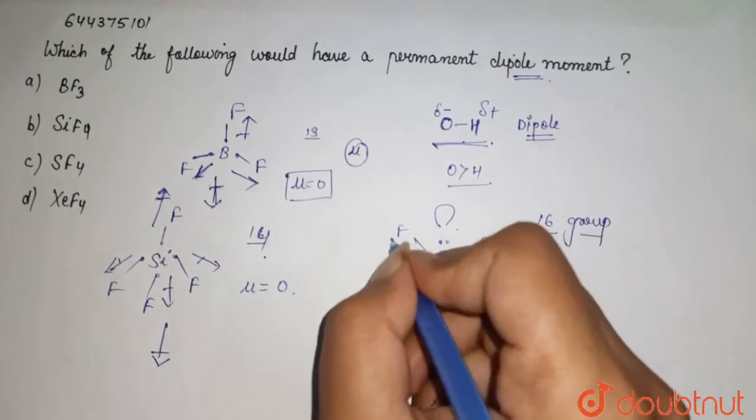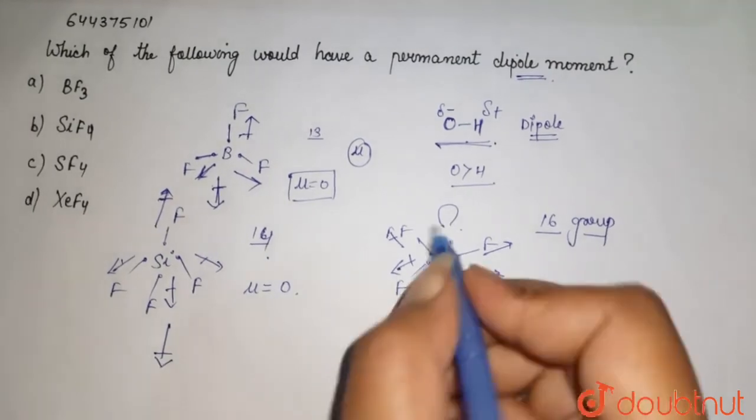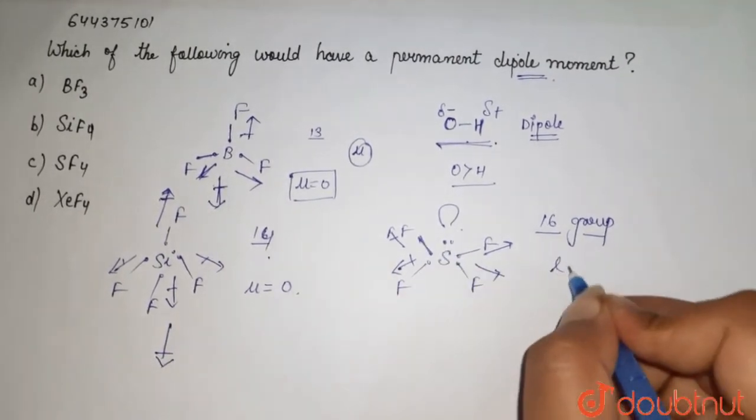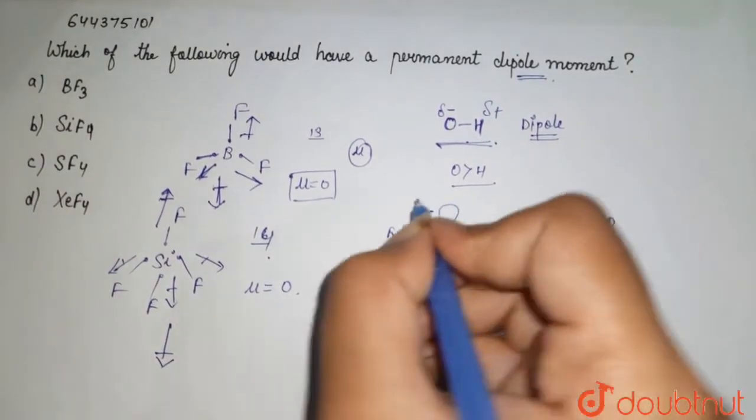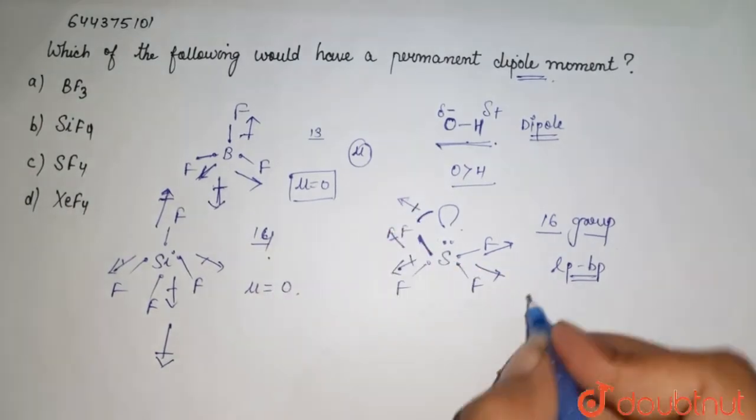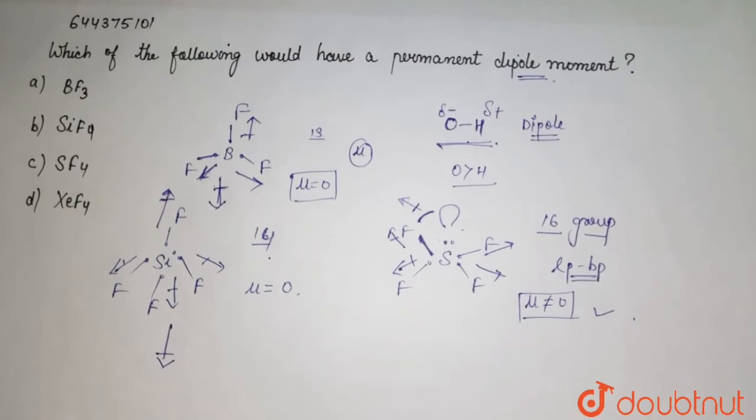Fluorine abstracts electron density towards itself. This lone pair present here and bond pairs cause lone pair-bond pair repulsion. This repulsion will cause a net dipole moment over here, so it contains a dipole. It does not have zero dipole moment due to lone pair-bond pair repulsions.